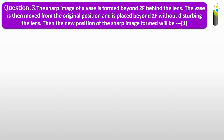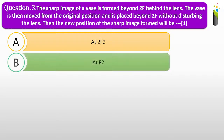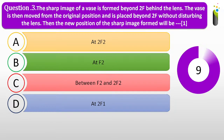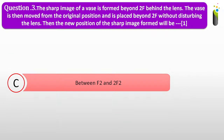Read the question carefully once again. The sharp image of a vase is formed beyond 2F behind the lens. The vase is then moved from the original position and is placed beyond 2F without disturbing the lens. Then the new position of the sharp image formed will be dash. Options: A, at 2F2; B, at 2F2; C, between F2 and 2F2; D, at 2F1. The correct answer is between F2 and 2F2.